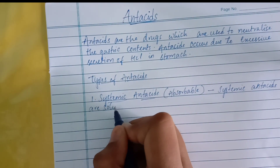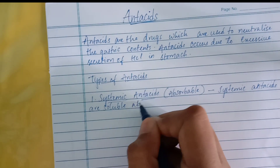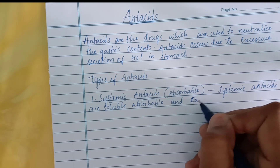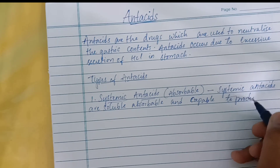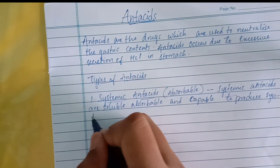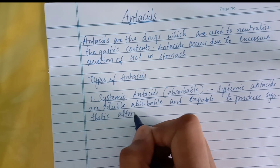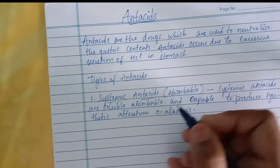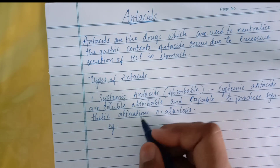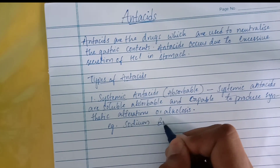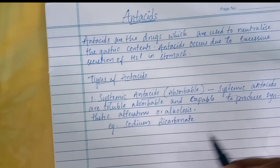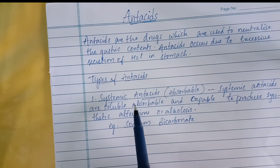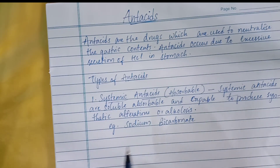Systemic antacids are soluble and absorbable, and capable to produce systemic alterations or alkalosis. The example of systemic antacids is sodium bicarbonate. Remember: systemic antacids are absorbable and capable to produce systemic alterations or alkalosis.